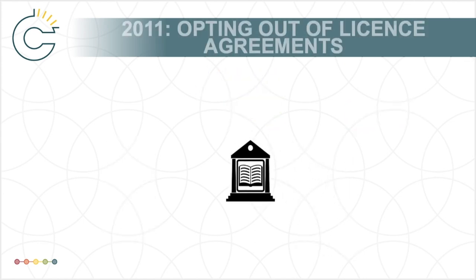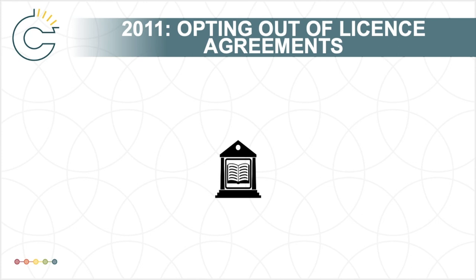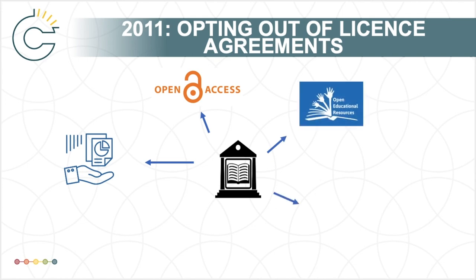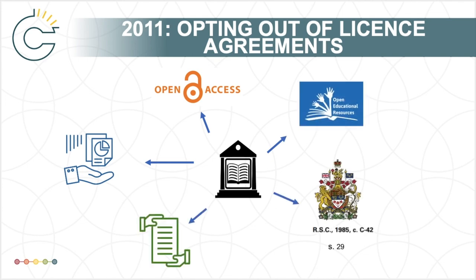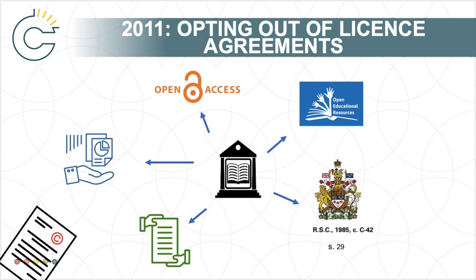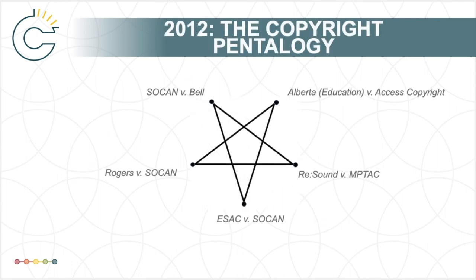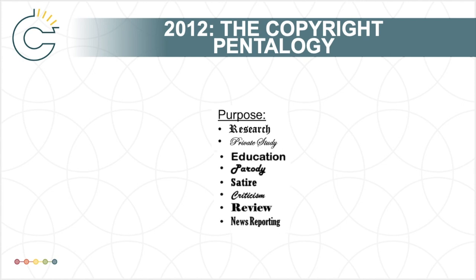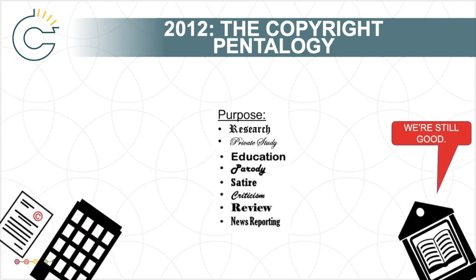The educational institutions that opted out had determined that their copying could be managed through other strategies, like using site licenses from content vendors, open access materials, open educational resources, relying on fair dealing exceptions, and using transactional licenses. They therefore did not need to enter into an institutional license agreement with Access Copyright. The 2012 Supreme Court decisions, including SOCAN v. Bell and Alberta Education v. Access Copyright, helped clarify the fair dealing exceptions that universities were often relying on. In 2012, education was also officially added as a purpose under fair dealing, making the royalty rates even less appealing to educational institutions.